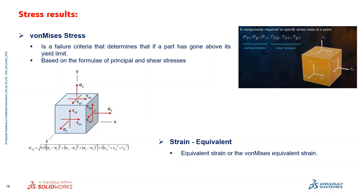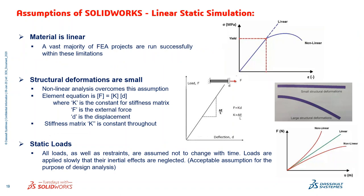We have von Mises stresses, strain equivalence — a kind of volumetric strain. We have sigma X, Y, Z, and tau XY, XZ, and YZ. Based on these, the formula gives you the von Mises stresses. We also have the strain equivalent, plane strain, and plane stress. The von Mises stress is on the volumetric side, and the strain works on the equivalent von Mises stresses. For more information you can do a small study on it.